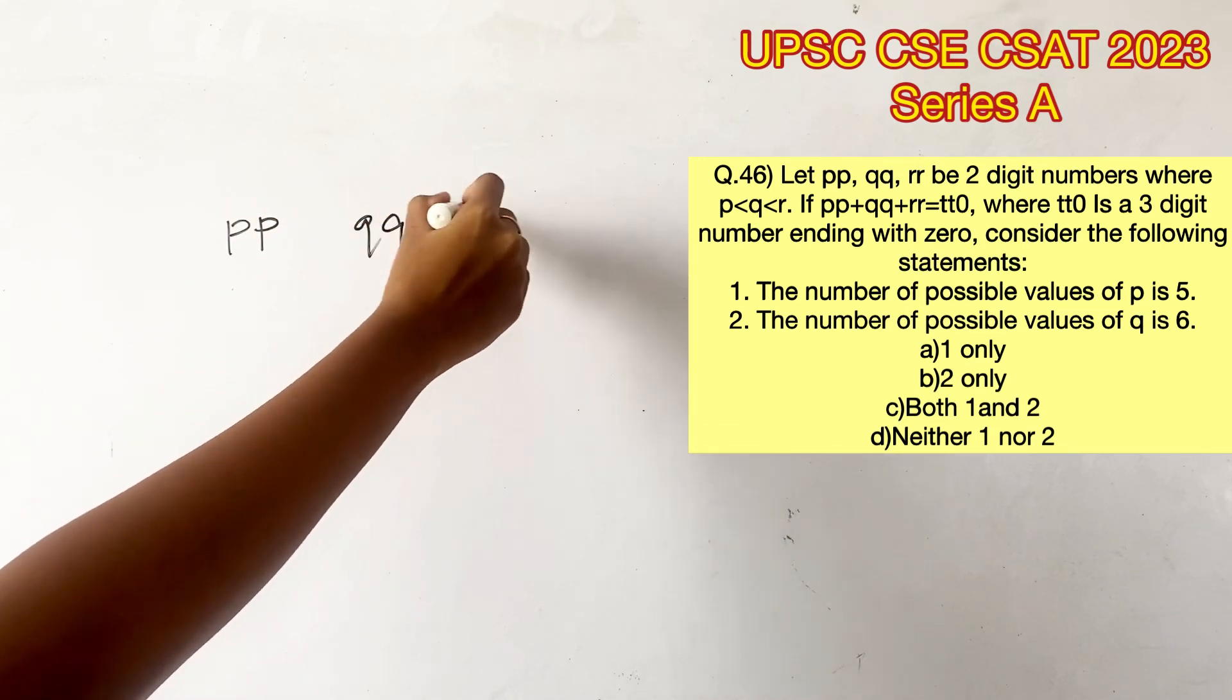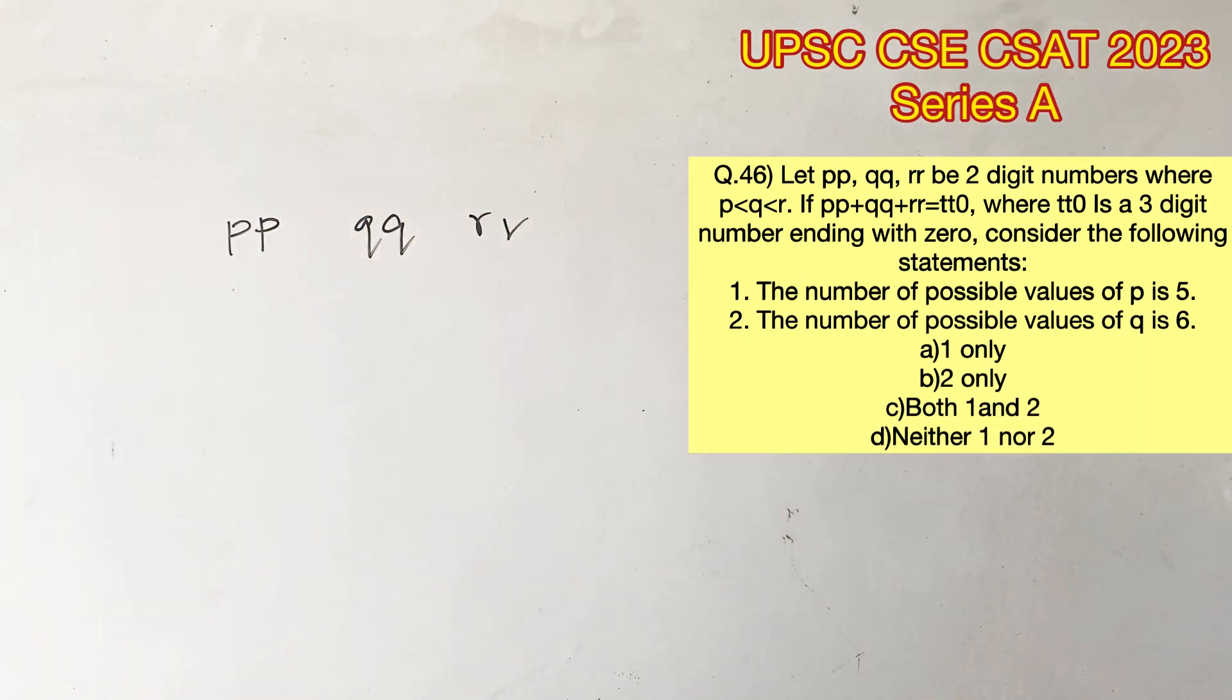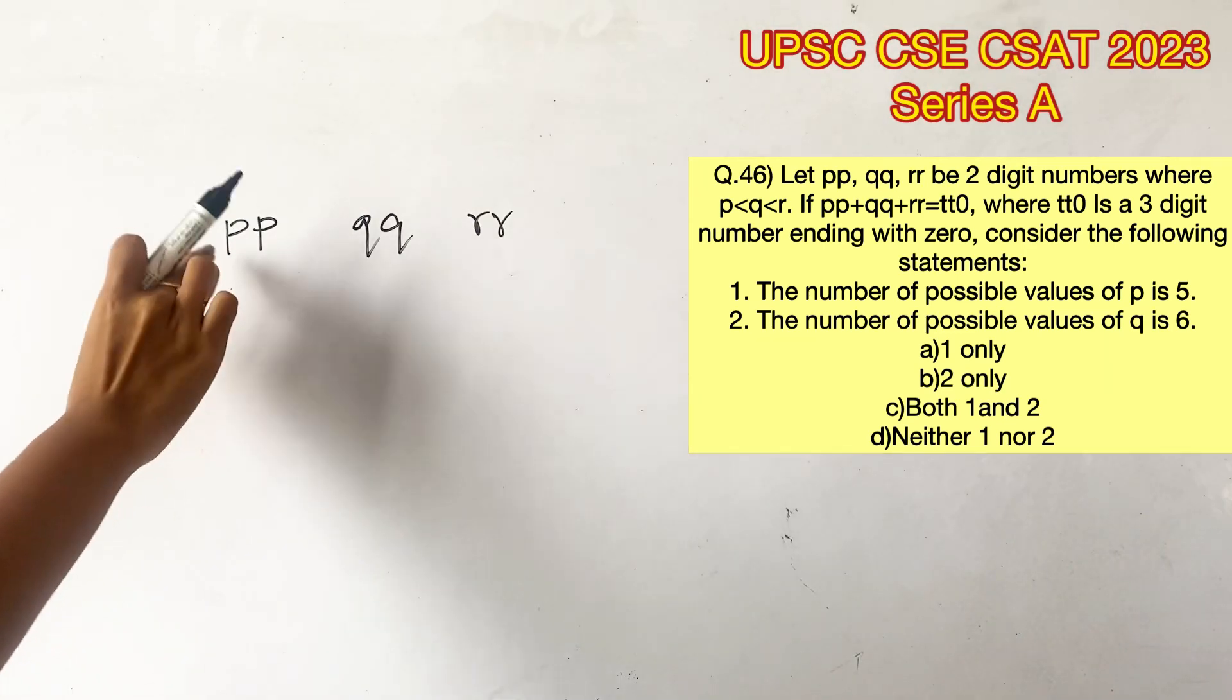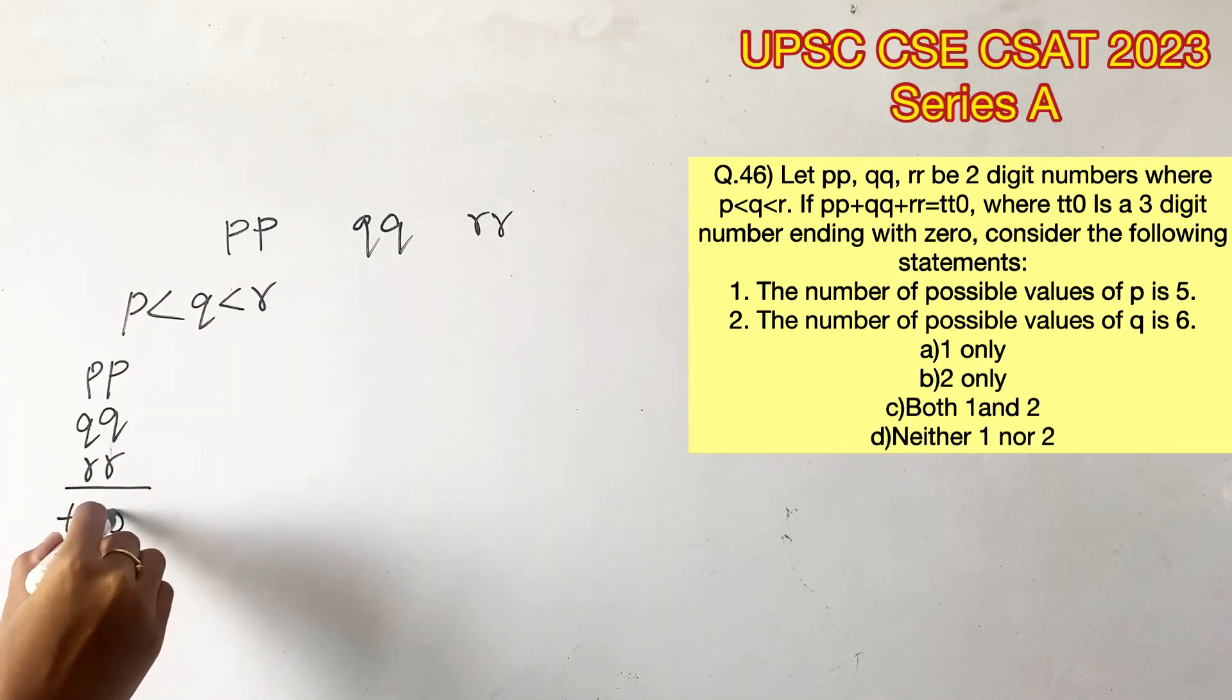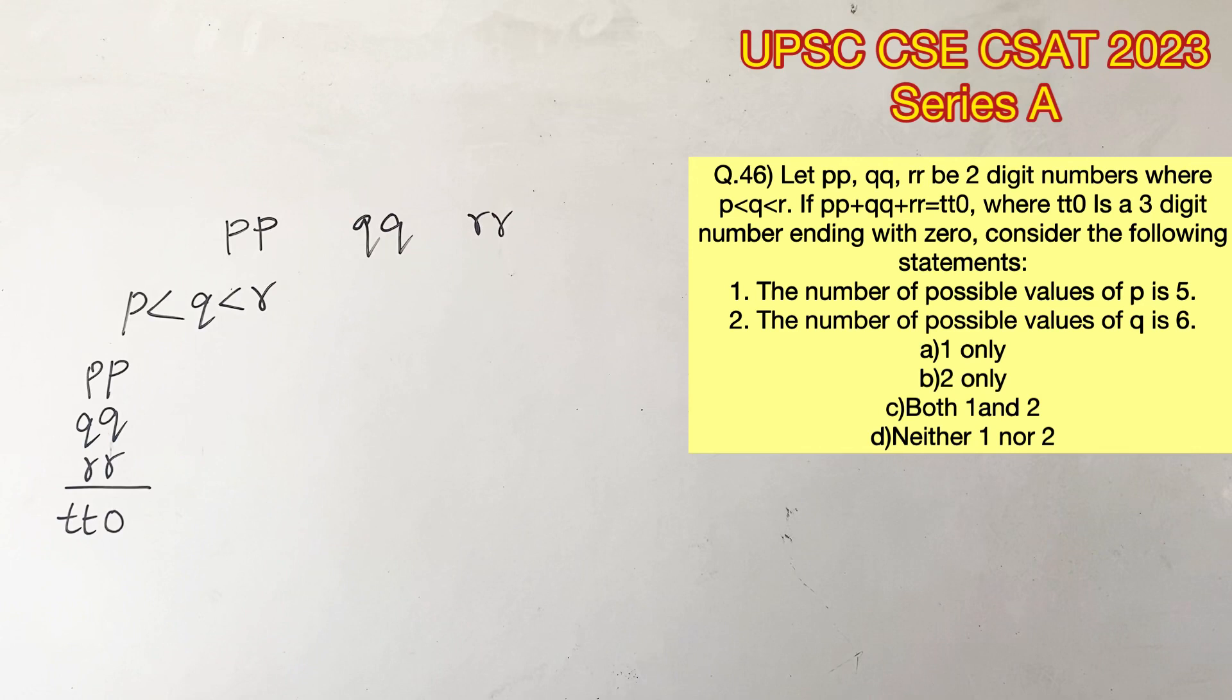Let PP, QQ, RR be two-digit numbers where P is less than Q is less than R. Given that PP plus QQ plus RR gives TT zero, where TT zero is a three-digit number ending with zero. There are two statements given, out of which we have to find the ones that are true.